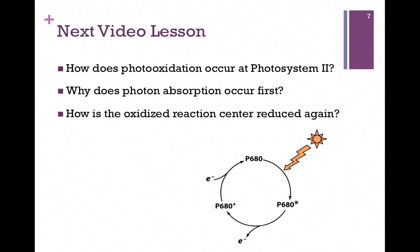In our next video lesson, we'll look at the process of photo-oxidation that occurs within that reaction center, specifically for photosystem II. We'll see why photon absorption occurs before oxidation and then how that oxidized reaction center gets re-reduced.